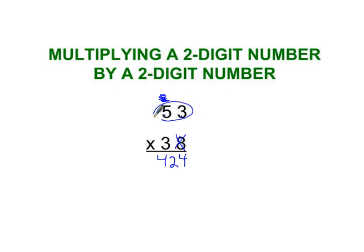The next step is that I'm going to multiply 53 times 3. Now, this is not really 3, it's 30. So I need to put a 0 down to hold the 1's place, because there's not going to be any numbers in the 1's place. It's going to start with the 10's place.